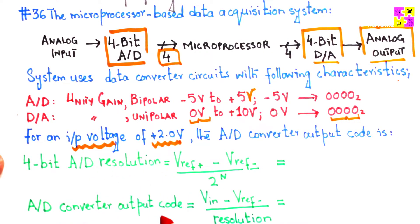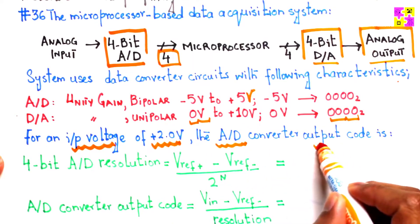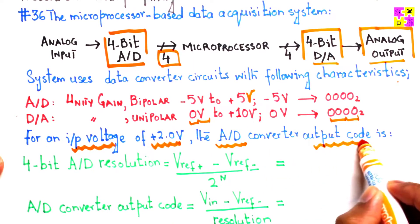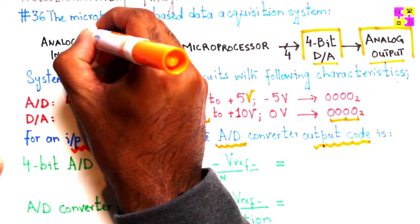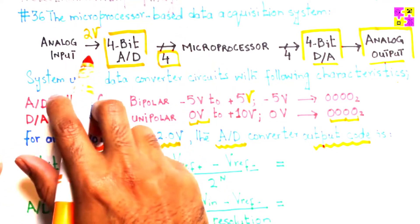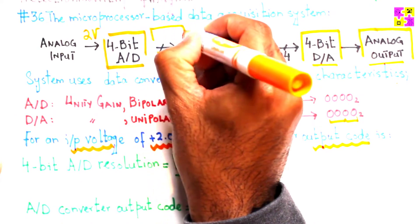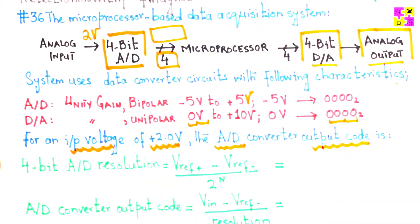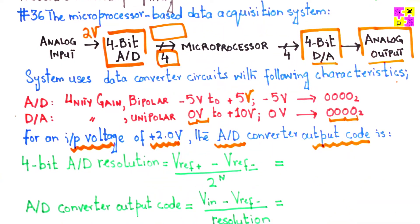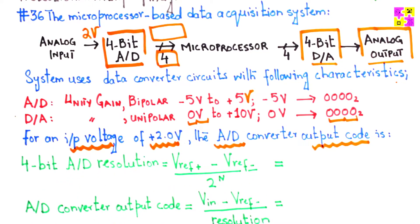That means if the analog input is feeding 2 volts, what would be the output in digital format? This equation should be familiar to you. The first thing we need to do is find out the resolution for a 4-bit analog-to-digital converter.